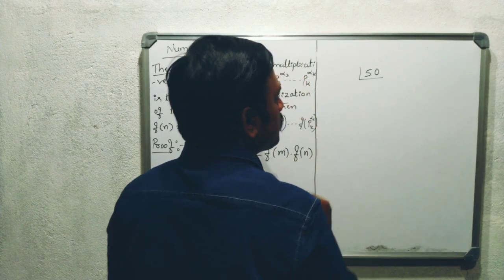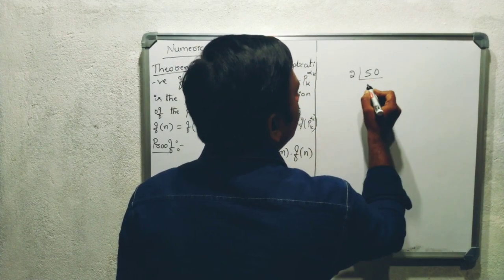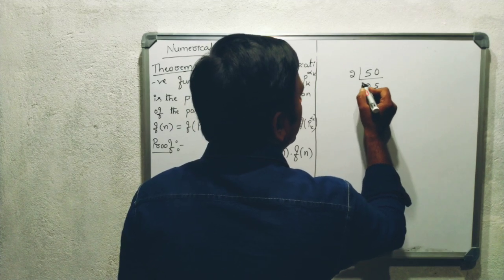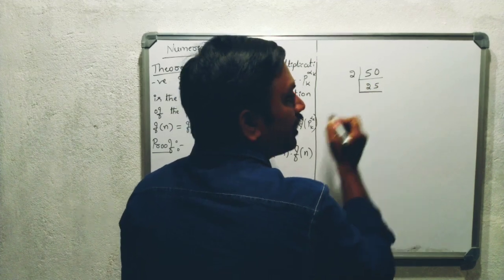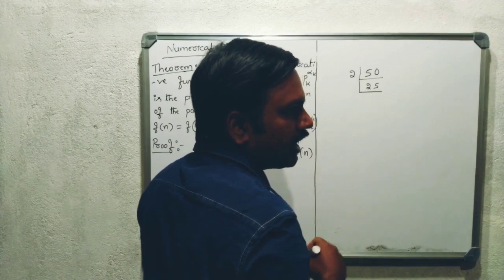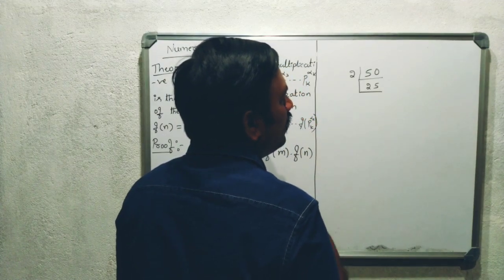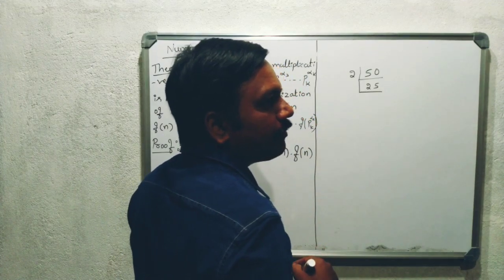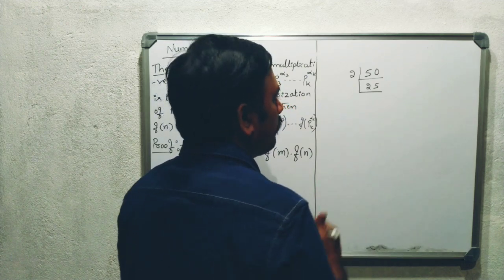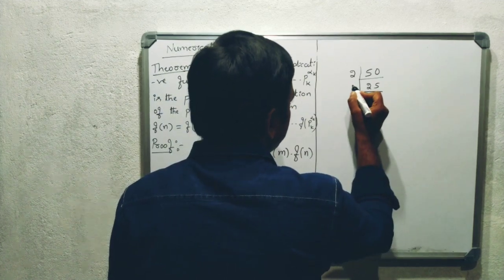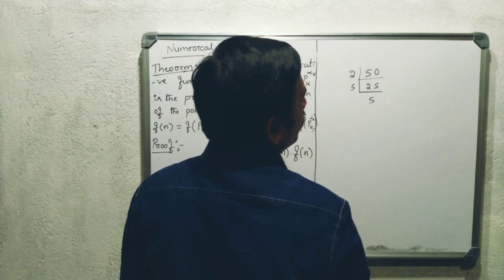First divide by the first prime number, which is 2. Two into 25 is 50. Next, can 2 divide 25? No. Can 3 divide 25? No. The next prime number is 5. Five into 5 is 25.